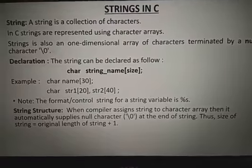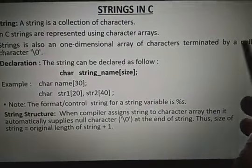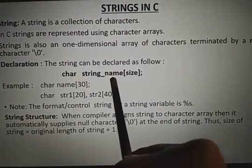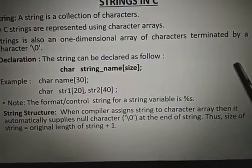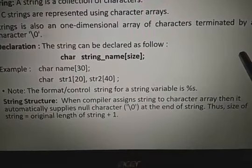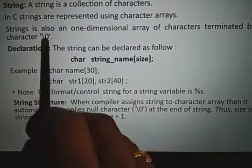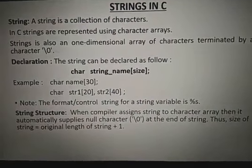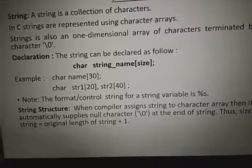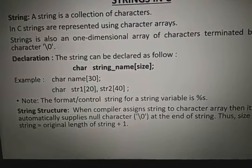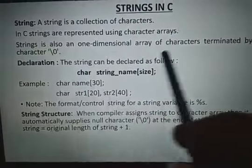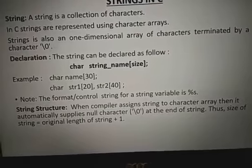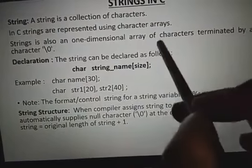What is the structure of a string? The character array is terminated by a null character. If you give size equals to 30, the starting index is 0 and ends at n minus 1. By default, slash zero is supplied. For example, SAI has 3 characters but the length becomes 4 because we are adding slash zero. If we declare name[4], we can only represent SAI and nothing more, because the last position is reserved for the null character.